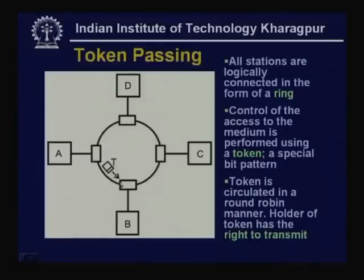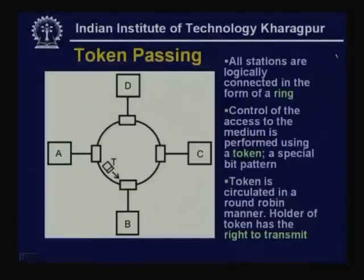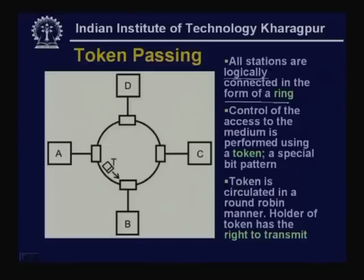Now we shall discuss the second approach used for round-robin technique: token passing. In a token passing approach, all stations are logically connected in the form of a ring — note the term 'logically.' Here we have shown stations not only logically but also physically connected in a ring.